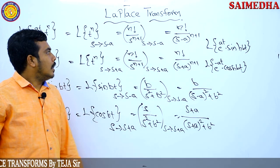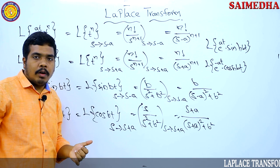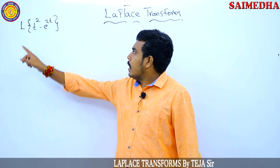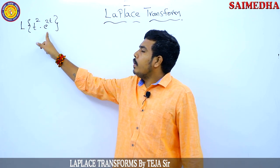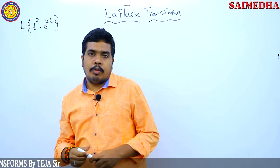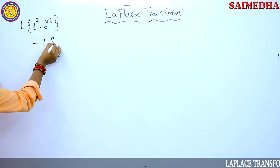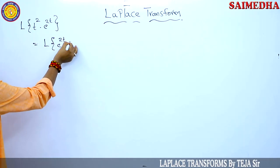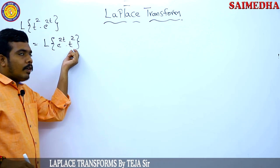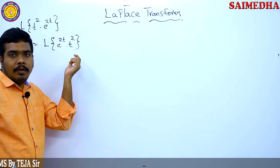I hope you have understood the Laplace transform of elementary functions multiplied with exponential functions. Just pause the video and copy the content. Now, looking at a problem based on the first shifting theorem: find the Laplace transform of t² into e^(2t). This can be written as the Laplace transform of e^(2t) into t², where the function is t² and the exponential multiplier is e^(2t).